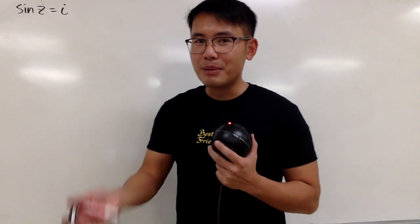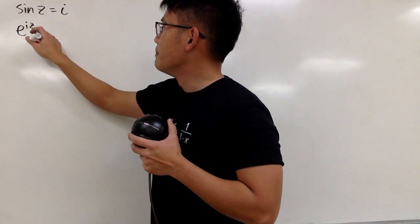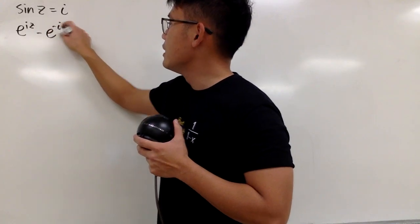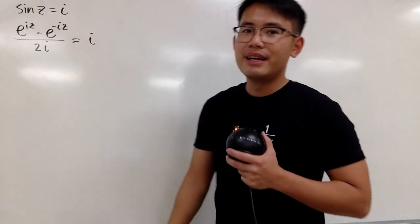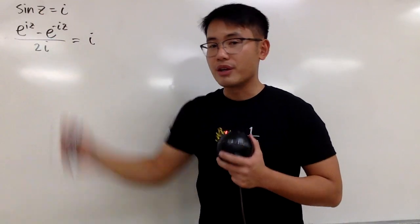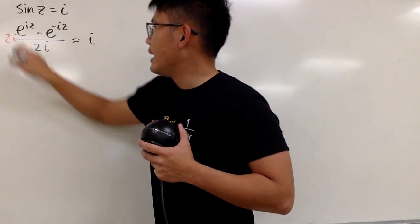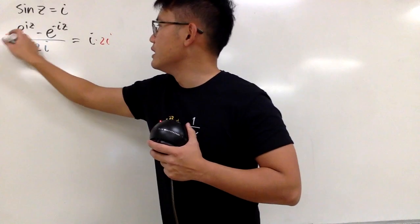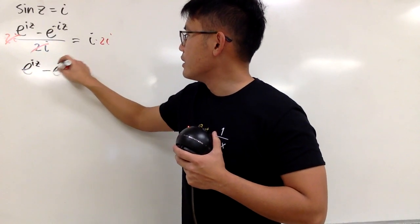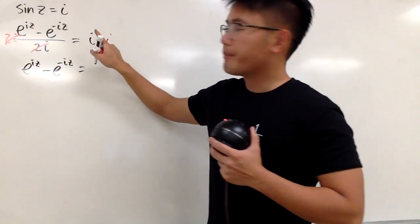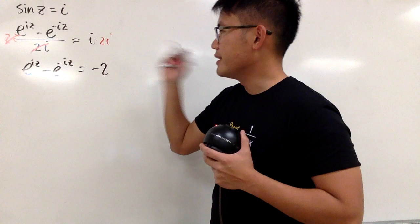Anyway, we have to utilize the complex definition of sin. Of course, it's going to be e to the iz minus e to the negative iz, all over 2i, and this is equal to i. And of course, to go from here to here, you guys can watch my other video for it as well. Now, let's multiply 2i on both sides, so this and that will be cancelled here. And then we just get e to the iz minus e to the negative iz equals i times i is negative 1, and that will be just negative 2. That's good.